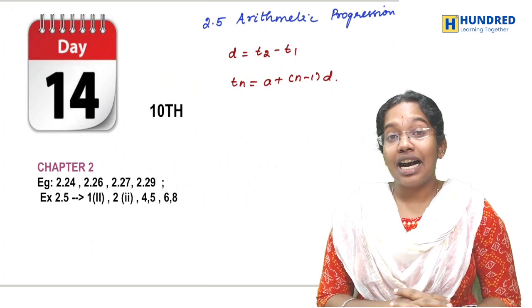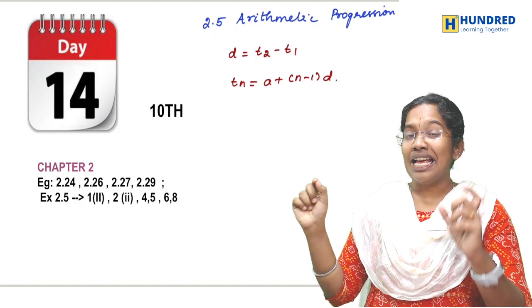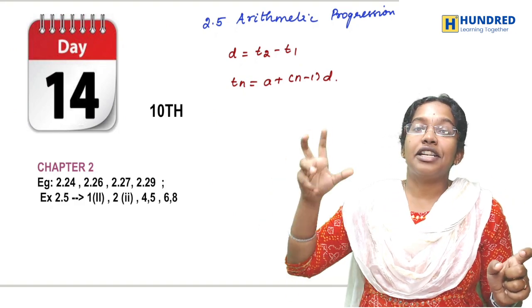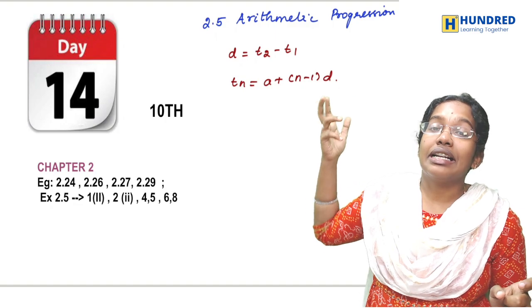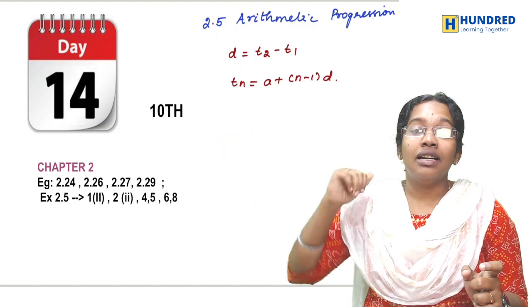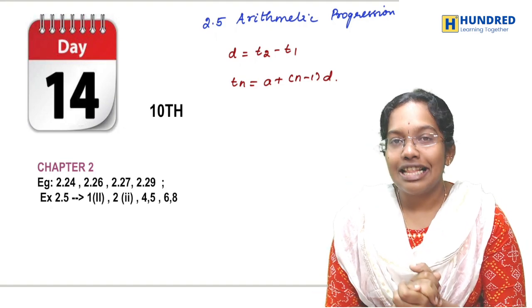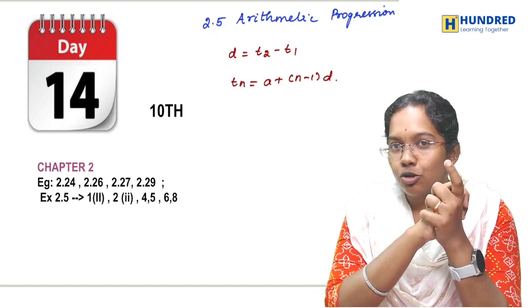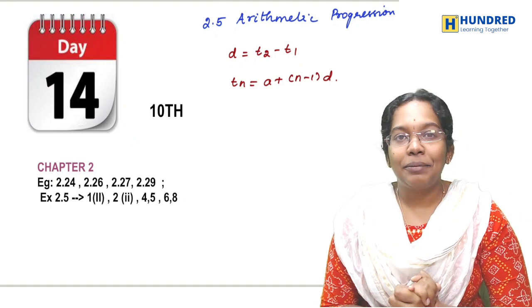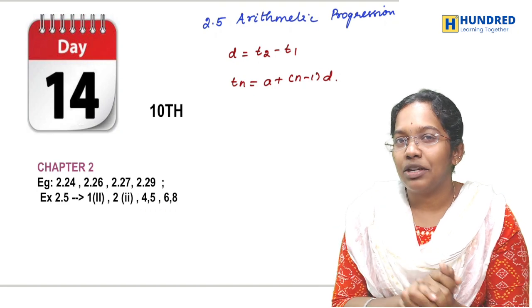Day 14 is about Exercise 2.5, which is Arithmetic Progression. If you look at this sequence, you will see Arithmetic Progression. The basic concept is the common difference. You will find the nth term using the basic formula. If you finish this exercise, move to the third chapter and start revising that exercise.